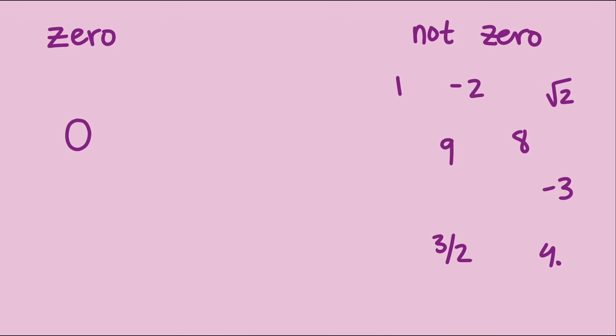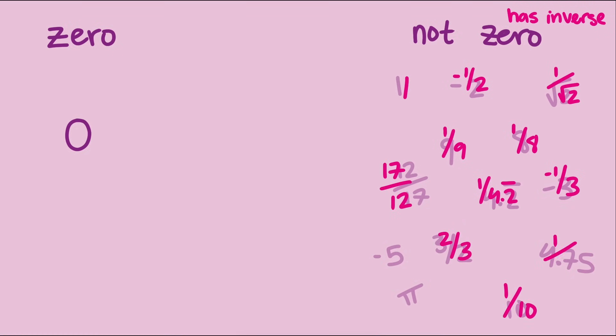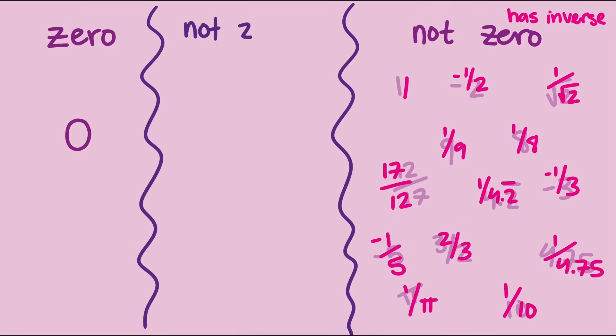This is a property matrices have that real numbers don't. With real numbers, a number is either zero or non-zero. And if it's not zero, it always has a multiplicative inverse. But with matrices, there's a third category. Non-zero matrices that still don't have an inverse.